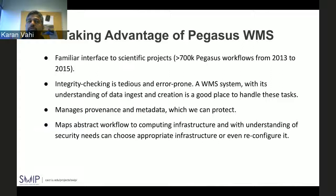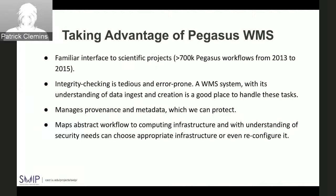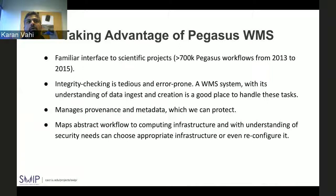Integrity checking can be very tedious and error-prone. Essentially, before any user application starts you check all input data and verify whether the checksum is correct or not. There are a lot of repetitive tasks, and as new data products are created, checksums are generated on the fly — so how do you manage all this provenance and metadata and how do you protect it? These tasks can be easily automated using Pegasus WMS.